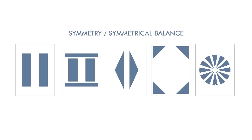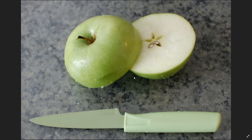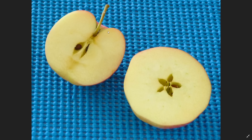Then we have radial symmetry. Mirror symmetry is found in nature everywhere. For example, if you have an apple cut horizontally, you will see radial symmetry. But if you cut the apple vertically, then you will see mirror symmetry. This applies not just to apple — any orange or any fruit — if you cut it horizontally on the x-axis, you will see radial symmetry.